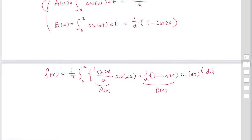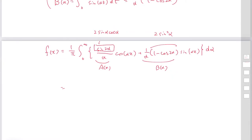Since sin(2 alpha) equals 2 sin(alpha) cos(alpha) by the double angle formula, and (1 minus cos(2 alpha)) equals 2 sin squared alpha, this simplifies to 2 over pi times the integral from 0 to infinity of sin(alpha) cos(alpha(x minus 1)) over alpha d alpha, using the addition formula for trigonometric functions.